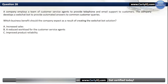Question 26. A company employs a team of customer service agents to provide telephone and email support to customers. The company develops a web chat bot to provide automated answers to common customer queries. Which business benefit should the company expect? Options: A. Increased Sales, B. A Reduced Workload for the customer service agents, or C. Improved Product Reliability. The correct option is B — a reduced workload for the customer service agents.